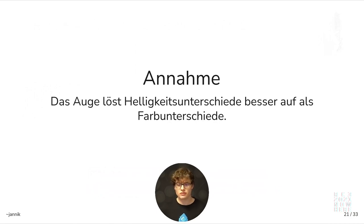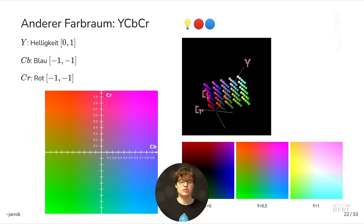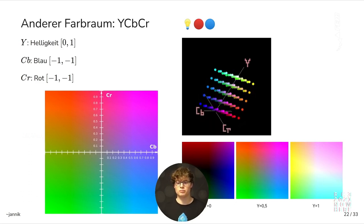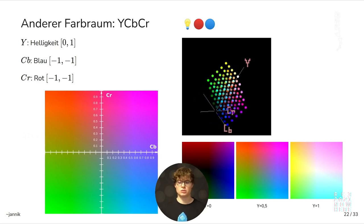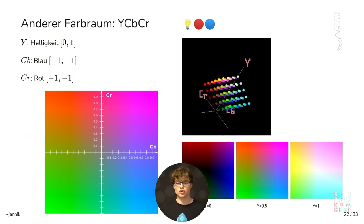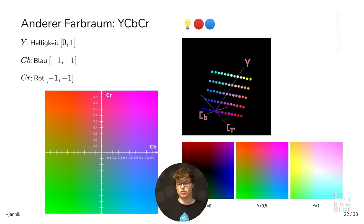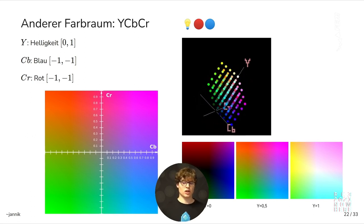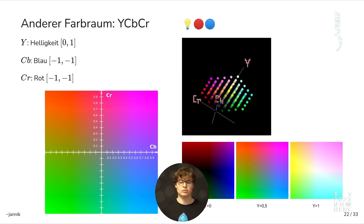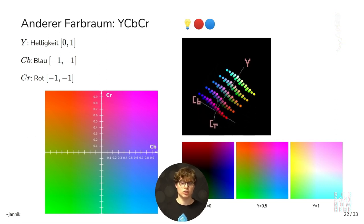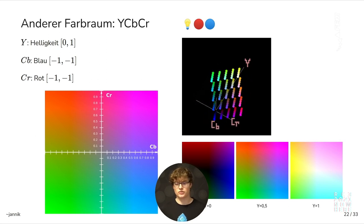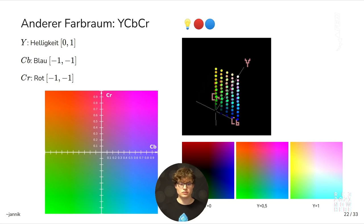The first assumption is that the human eye can resolve differences in brightness better than differences in hue. So if we separate hue from brightness, we can save the hue data with less resolution and save bandwidth. So far we've been talking about the RGB color space — red, green, blue. With the new color space YCbCr there's a separate channel for brightness and then two for hue. Brightness goes from zero to one, and blue and red from minus one to plus one — you can see this as a skewed cuboid. If you put blue and red at minimum value, you get green, which is why VLC player shows green pixels on transmission errors.